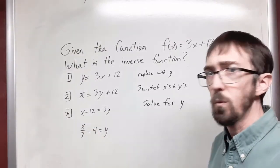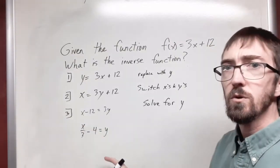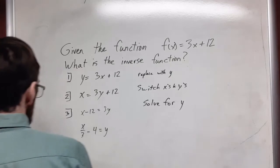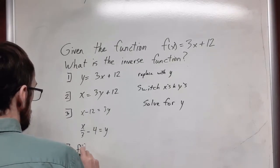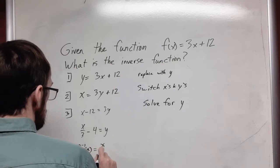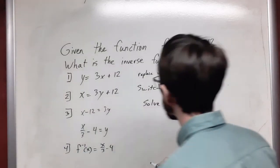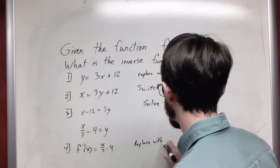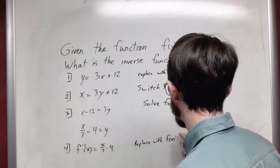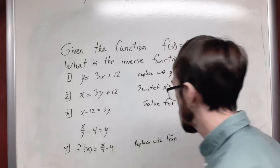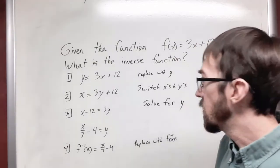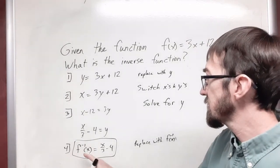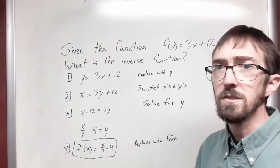So, this is our solve for y here. And then, the fourth step is we're going to replace this y with the inverse function notation. So, this is our inverse function. We have f inverse of x equals x divided by 3 minus 4.